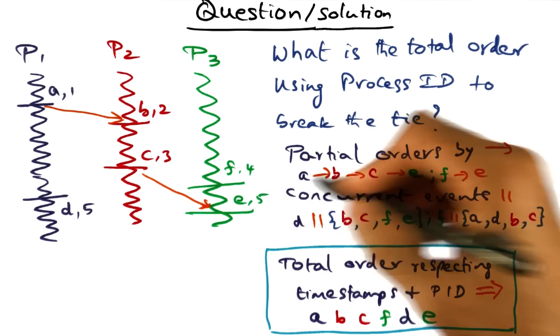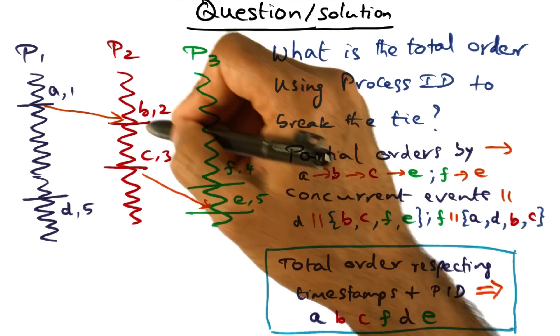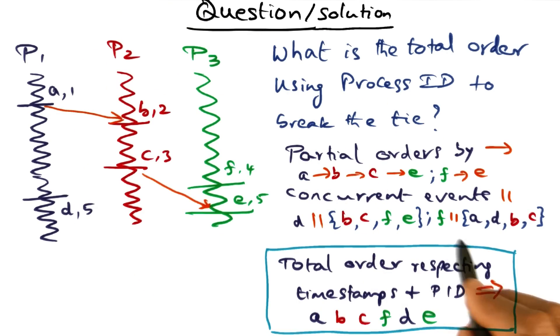And similarly, if you look at this event F, it's concurrent with all the events that are happening in process P2 and P1, right? So this is what you see as the concurrent events.